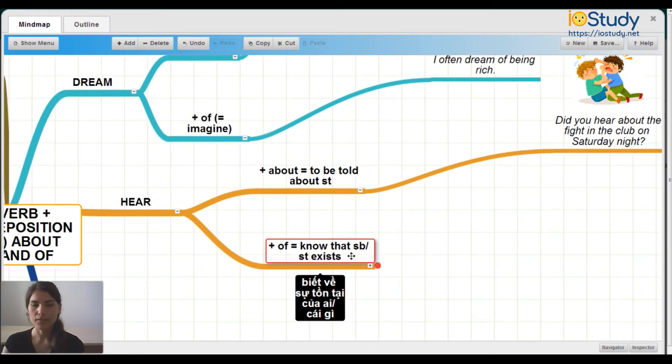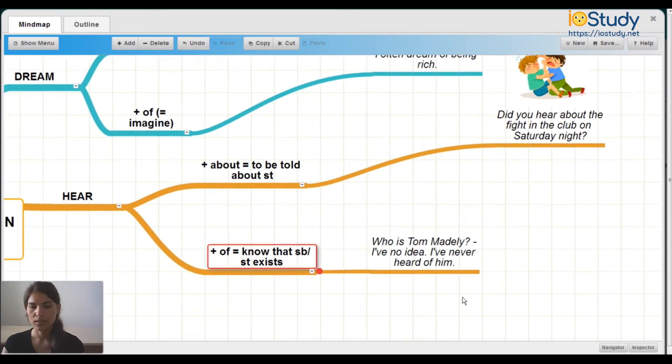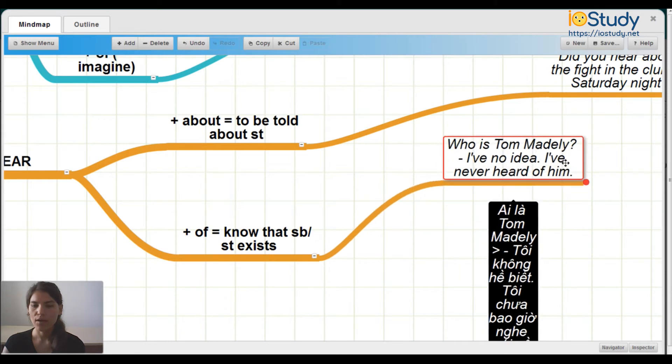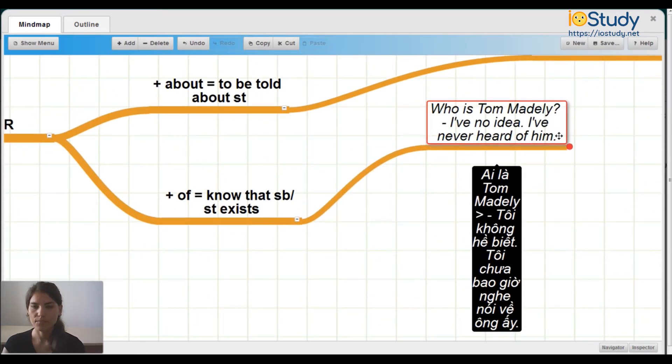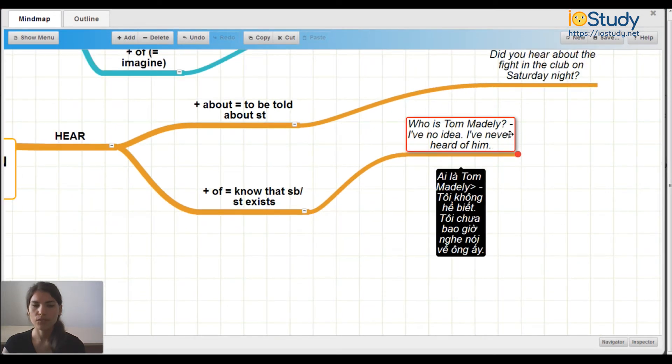Now hear of means to know that somebody or something exists. So who is Tom Maidley? I have no idea. I've never heard of him. This means to know that somebody or something exists.